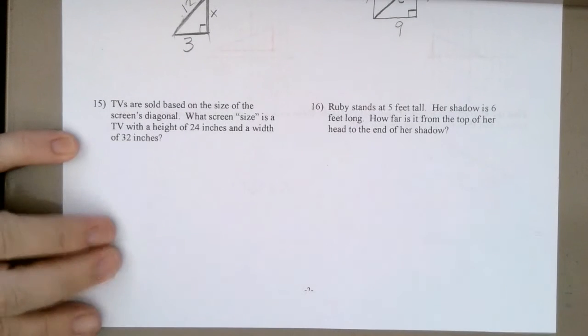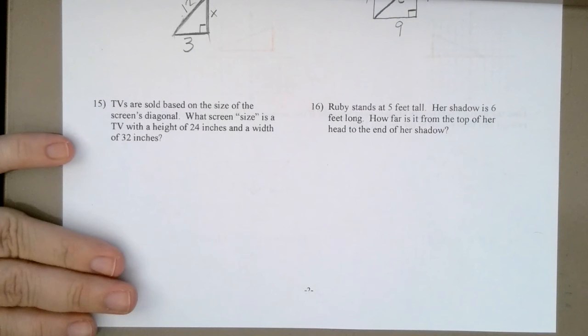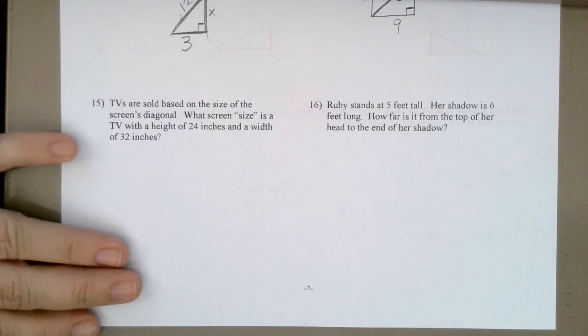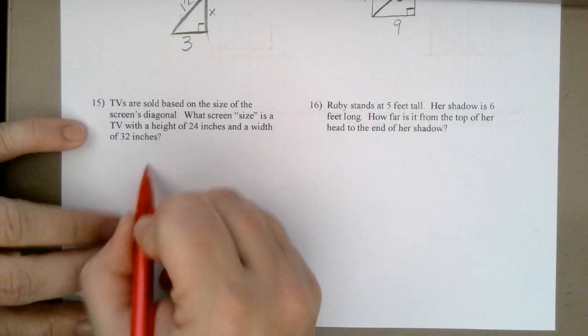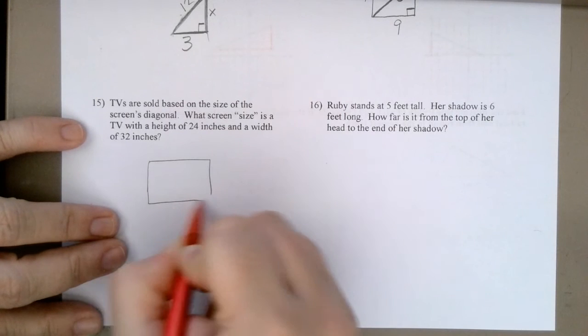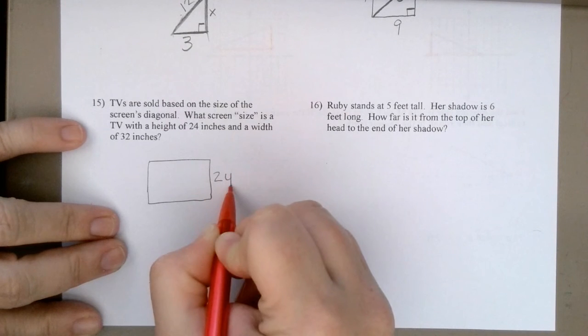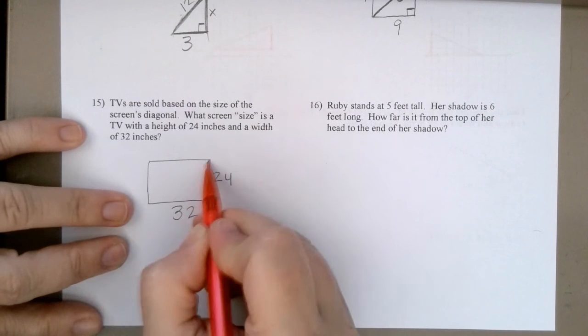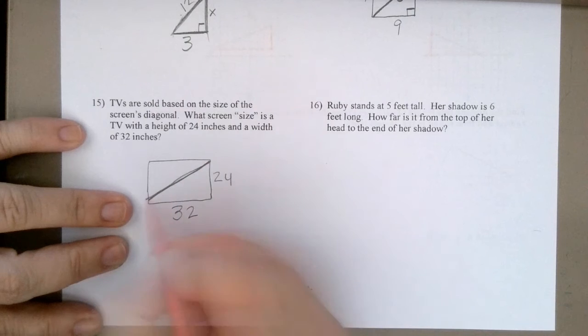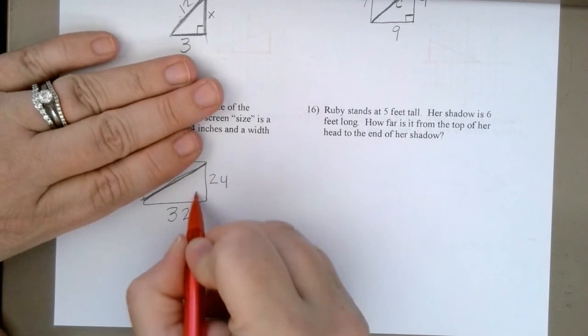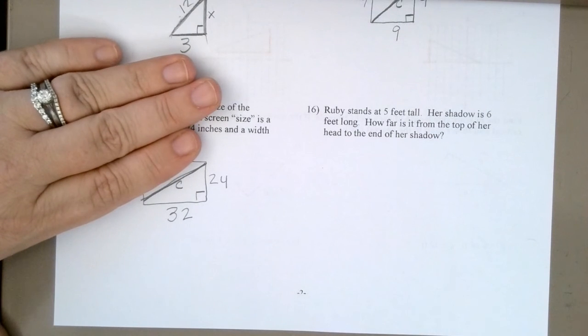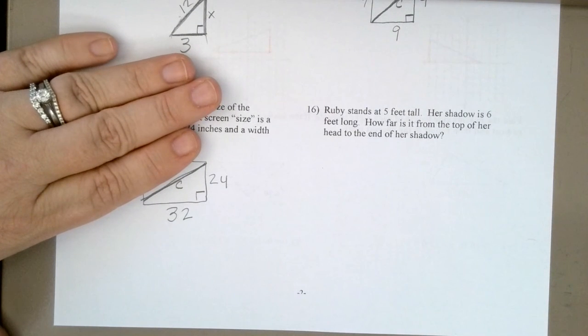TVs are sold based on the size of the screen's diagonal. Did you know that? Yeah. A 42 inch TV is not 42 inches tall or 42 inches wide. It's 42 inches diagonally. So, what screen size? Here's the TV screen. If the height is 24 and the width is 32, the diagonal is what you're looking for. Well, that's the exact same thing. You have a right angle. You're looking for the C value.